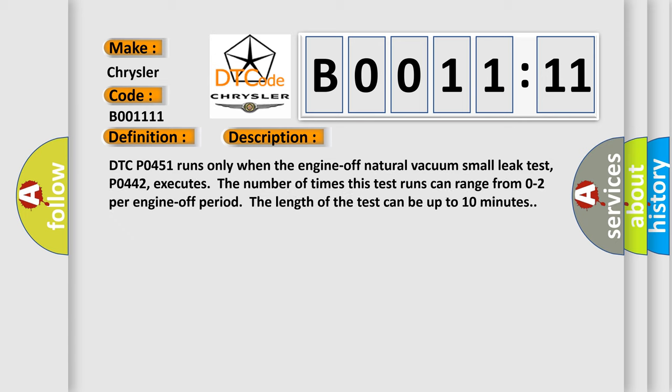DTC P0451 runs only when the engine-off natural vacuum small leak test P0442 executes. The number of times this test runs can range from zero to two per engine-off period. The length of the test can be up to 10 minutes.